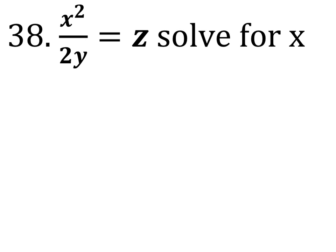On these, we are solving for x once again. So we must multiply both sides by 2y. Multiply by 2y here and multiply by 2y around here.